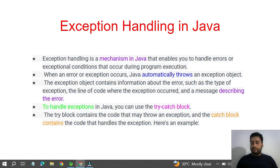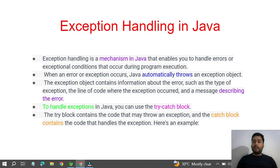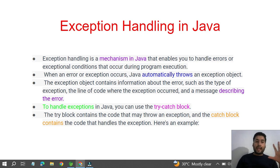Exception handling is a mechanism — a way to write code that enables you to handle errors or exceptional conditions that occur during program execution. It's a logic you keep in mind: whenever an error happens, it will trigger a condition that occurs during program execution time.